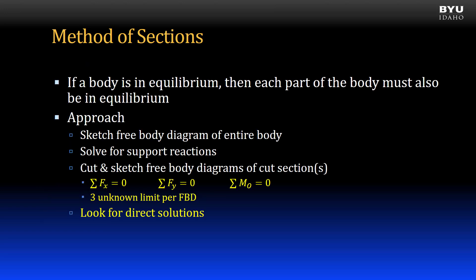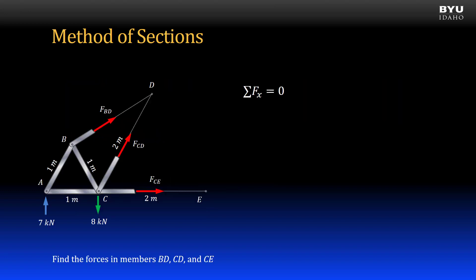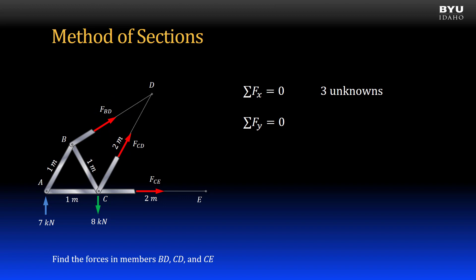Now we will use the equations of equilibrium to solve for our unknown member forces. Since we are analyzing plane trusses, we can use three equations of equilibrium and are therefore limited to a maximum of three unknowns per free body diagram. If I sum forces in the x direction, there will be three unknowns: force BD, force CD, and force CE. If I sum forces in the y direction, there will be two unknowns: force BD and force CD. I can also sum moments about any arbitrary point. If I sum moments about point A, all three unknowns will be in the equation.